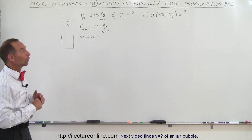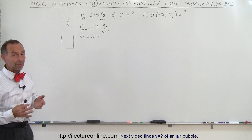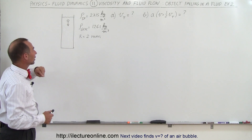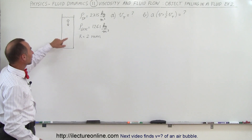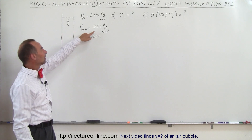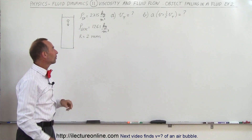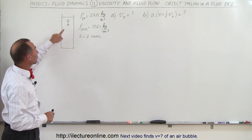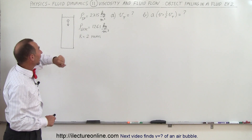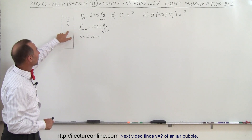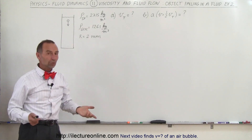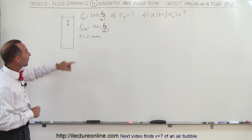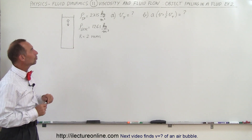Welcome to Electron Online. Here we're going to do another example with an object like a sphere falling in a viscous liquid. The liquid is glycerin, with a density of 1261 kilograms per cubic meter. The sphere is made of aluminum, with a density of about 2715 kilograms per cubic meter. The radius is two millimeters.